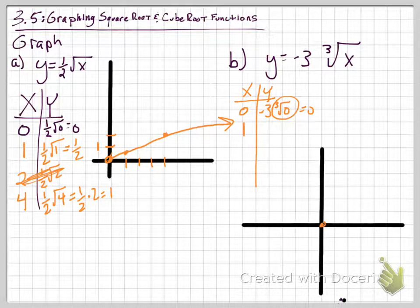Now I'm going to plug in perfect cubes, and I know 1 is a perfect cube. So if we do negative 3 times the cube root of 1, that's really just negative 3 times 1, which gives me negative 3. So if I plot that coordinate 1, negative 1, 2, 3, I'm down here.